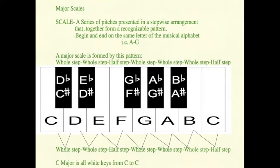As you can see here, a scale is a series of pitches presented in a stepwise arrangement that together form a recognizable pattern. And they begin on the same letter of the musical alphabet, such as A, B, or C.